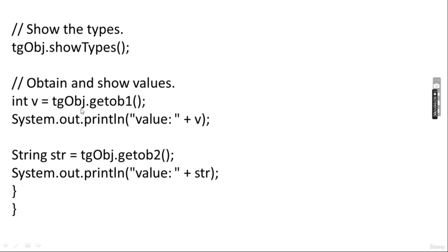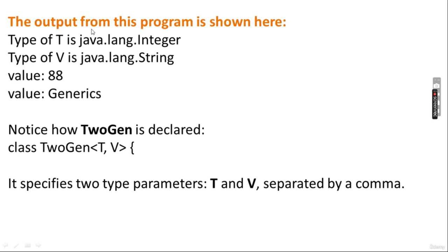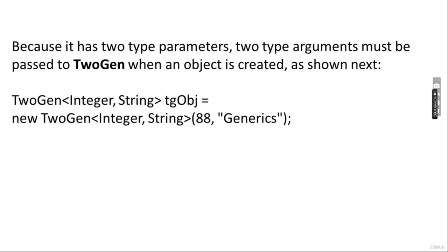Then Integer v equals tgObject.getObject1() and its value is displayed after auto-unboxing. Then String s equals tgObject.getObject2() and its string value is displayed. The output is: type of T is java.lang.Integer, type of V is java.lang.String, value is 88, value is generic.